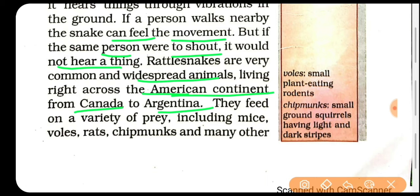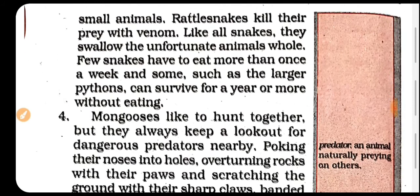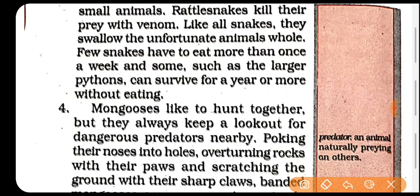Aur woh bahut alag alag type ki variety khaate hain — they feed on a variety of prey. Prey means shikar karna. Including mice, wolves, rats, chipmunks, insects, aur bahut saare doosre small animals ko bhi yeh khaate hain. Jo rattle snakes hain woh apne prey ko apne venom — apne zeher — se maarte hain, apne daanton se kaat kar maarte hain. Aur doosre snakes ki tarah se woh swallow karte hain — nigal lete hain — poore animals ko seedha hi kha jaate hain.